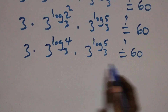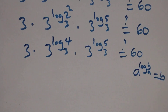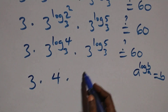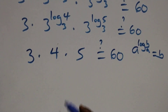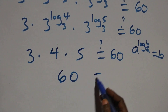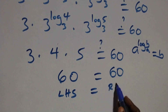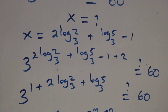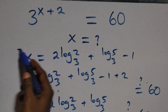This follows the identity: a raised to the power log b to base a equals b. So this becomes three times four, times five. Three times four is twelve, twelve times five is sixty. Sixty equals sixty — left hand side equals right hand side. Therefore we conclude that x equals two log two base three, plus log five base three, minus one.